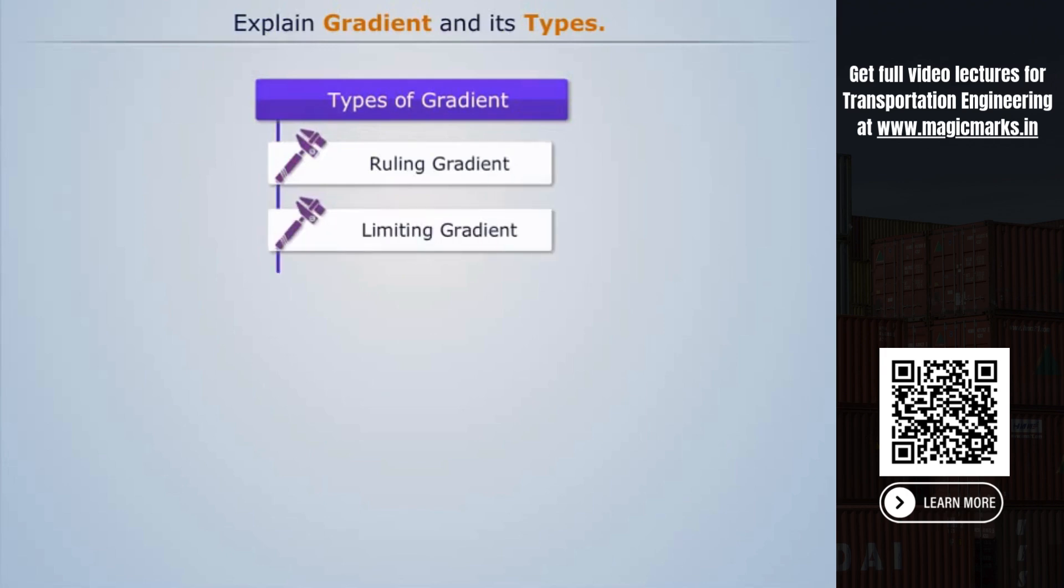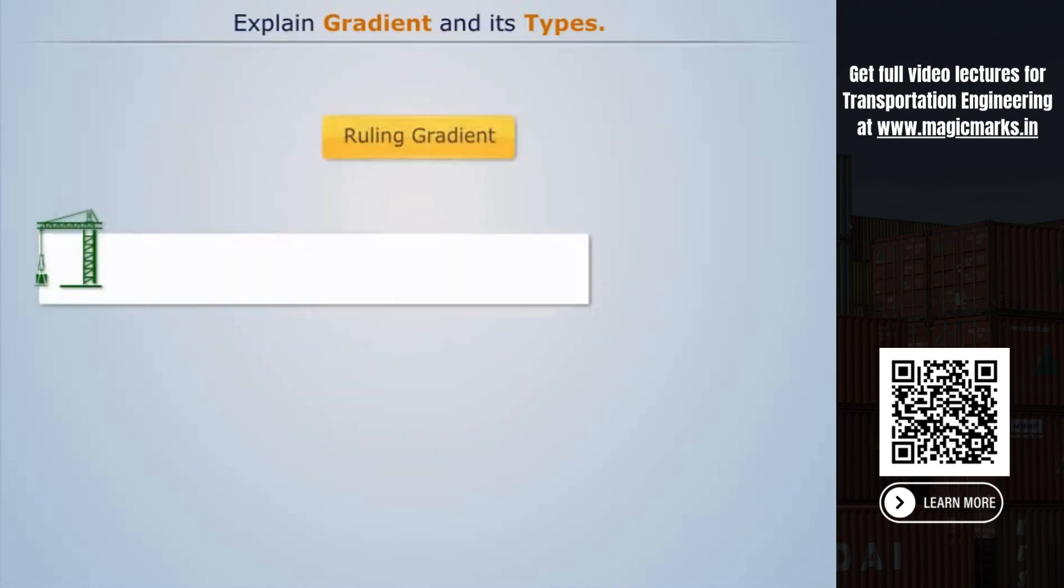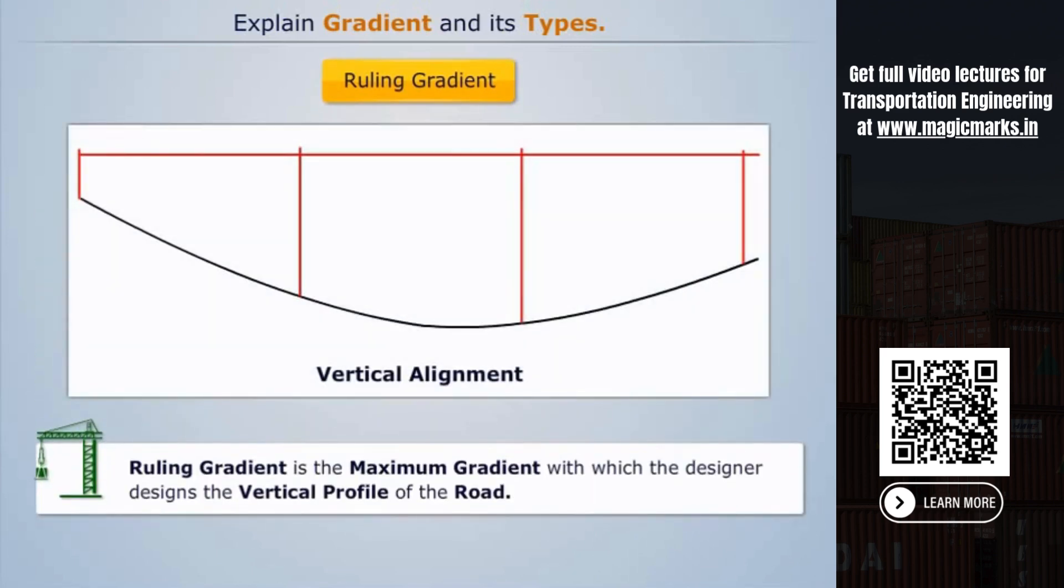Ruling gradient is the maximum gradient with which the designer designs the vertical profile of the road. It depends on the following factors.